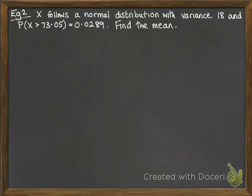We'll do another example. X follows a normal distribution, variance 18, and we're given this particular probability and asked to find the mean. So we're going to go through the same process.